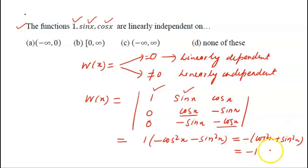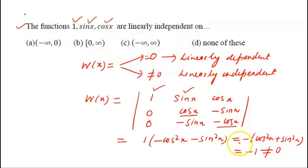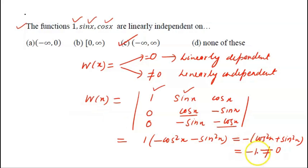The Wronskian value is -1, which can never be 0. Since it is constant and non-zero, it is not dependent on any value of x. Therefore, the functions 1, sin x, and cos x are linearly independent in the largest possible interval, which is (-∞, ∞). The correct option is C.